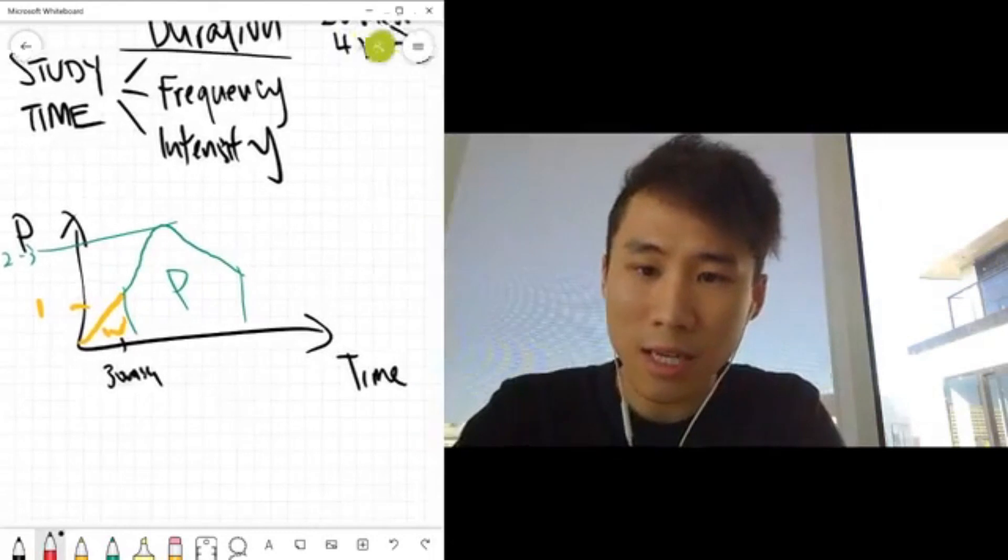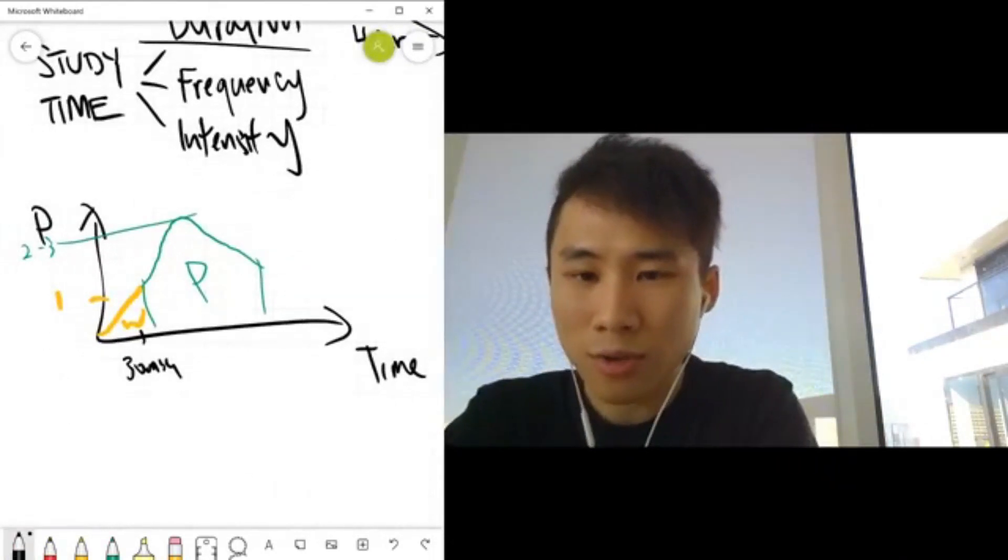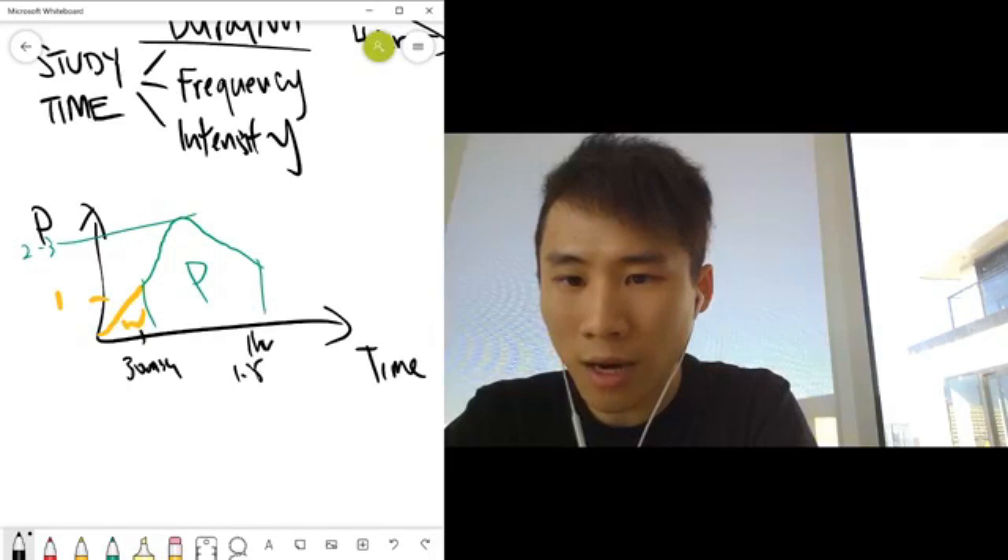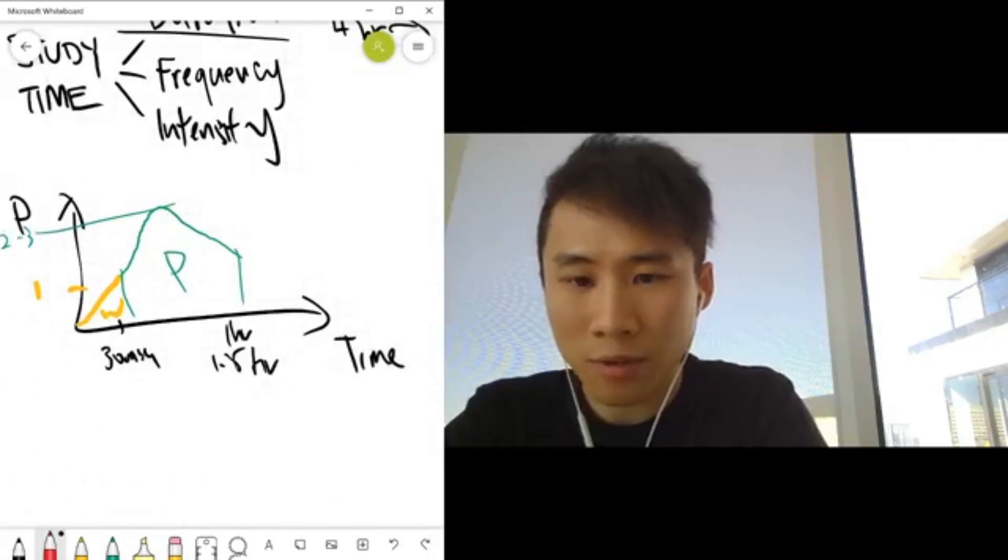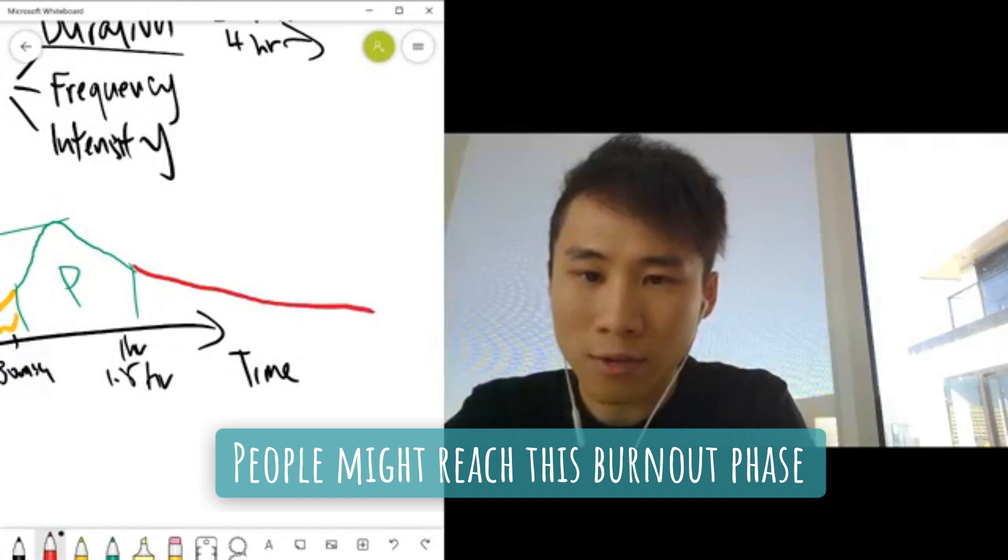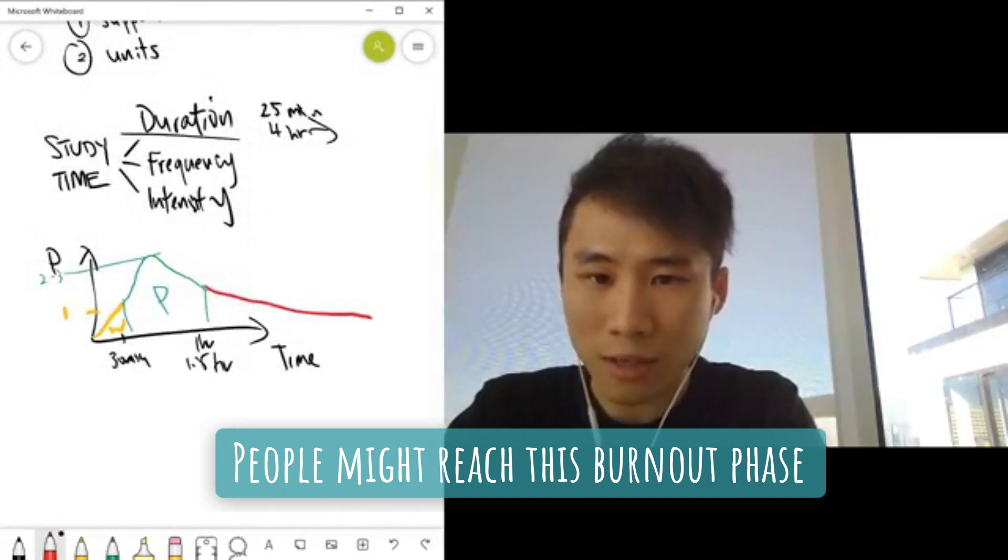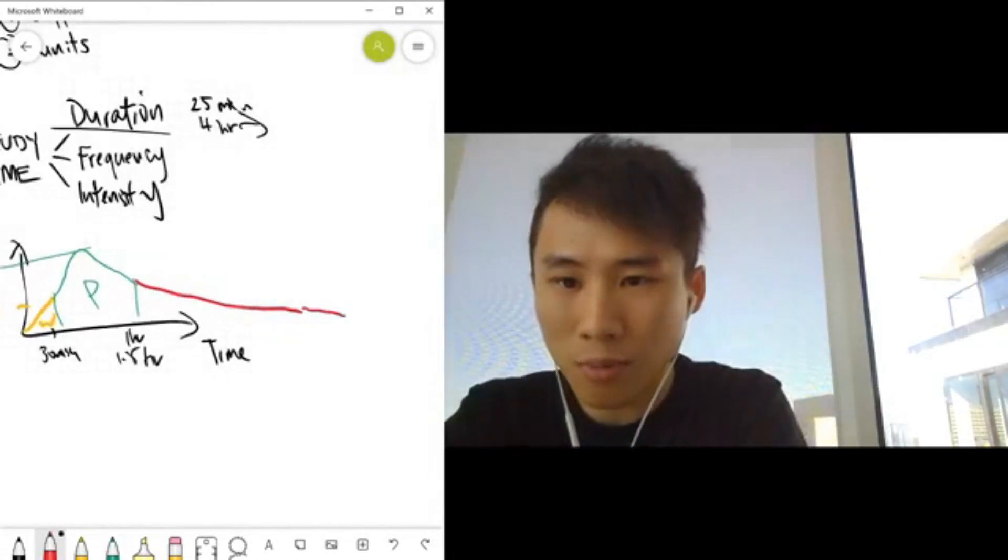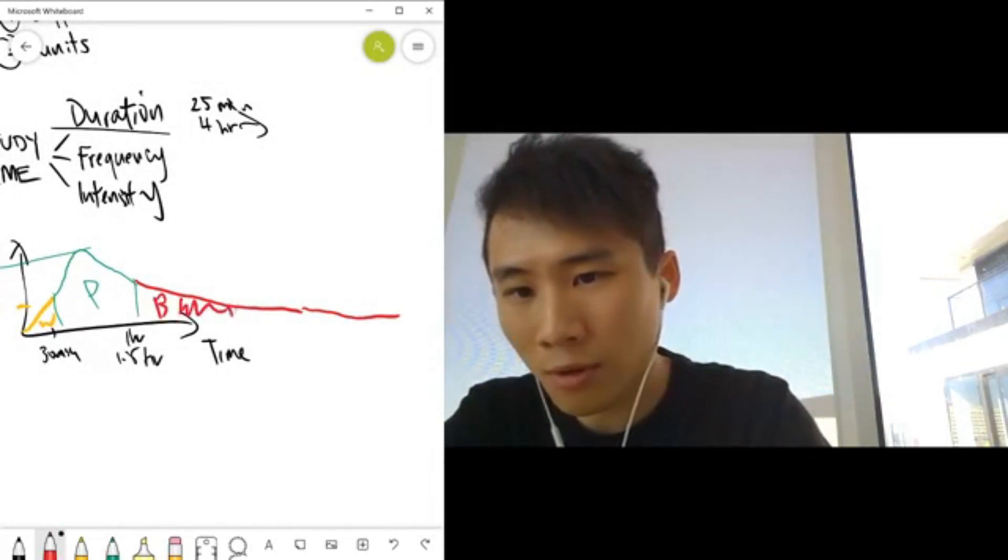But then here comes the next problem. As you study longer, usually at around the one hour or one and a half hour mark, this is where your productivity drops. A lot of people reach this burnout phase, so the productivity is actually really low - it kind of dips. The more time you put in, the more ineffective you get. This is the burnout zone I talked about in a video as well.